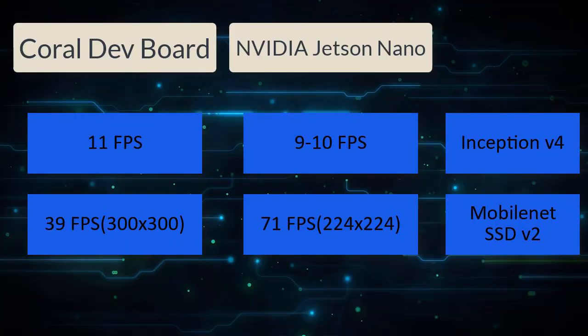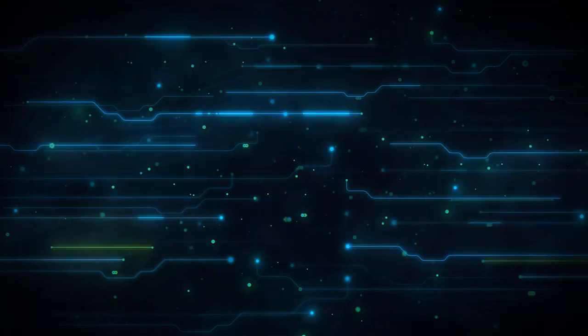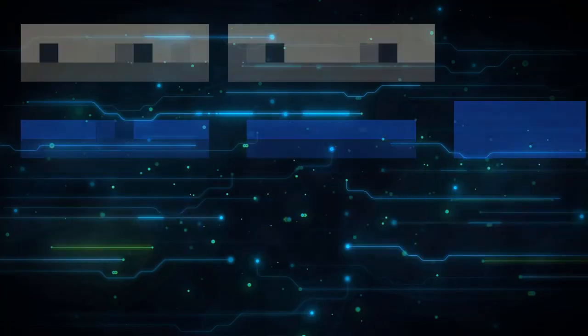When looking at the numbers, pay attention to the fine print. All benchmarks are performed using C++ benchmark tests. Also, Google's numbers are for the inference stage only, which is a much cleaner and shorter operation — the steps before that are executed on the CPU, which is quite weak on the Google Dev Board as it uses an older Cortex-A53. Because the official benchmarks are inconclusive, I decided to make some of my own tests.